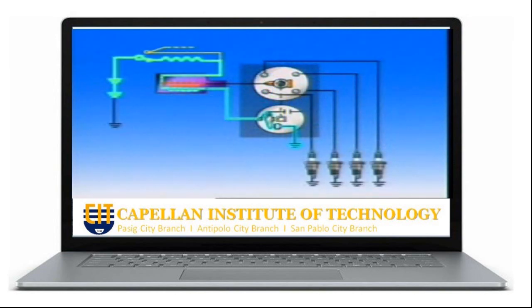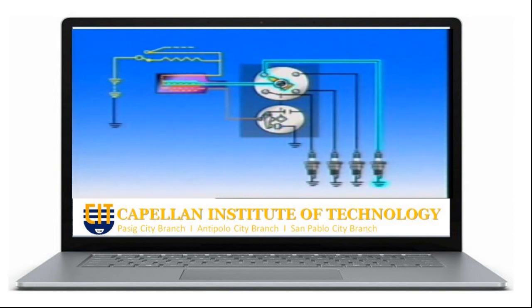The system has two circuits. The primary or low tension circuit initiates the spark. The secondary or high tension circuit produces the high voltage and distributes it to the spark plugs.